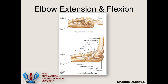In elbow extension, the undersurface of the distal humerus articulates with the olecranon and the undersurface of the capitulum articulates with the radial head. But in flexion, the anterior surface of the trochlea articulates with the olecranon and the anterior surface of the capitulum articulates with the radius.